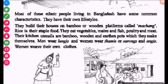Their kitchen utensils are bamboo, wooden, and earthen pots, which they make themselves. Men wear lungis. Women wear themis or sarongs and angis — they wear their own traditional clothes.